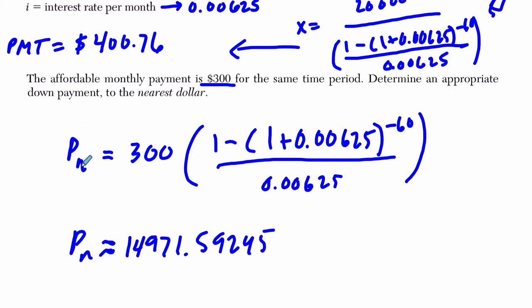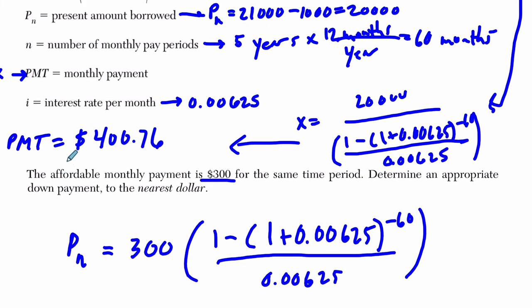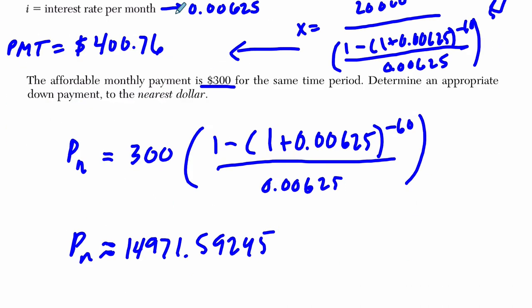But this is, what does that represent? P sub N, if you remember, that is the present amount borrowed.